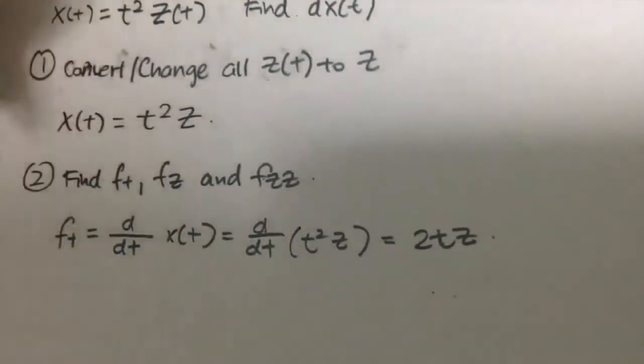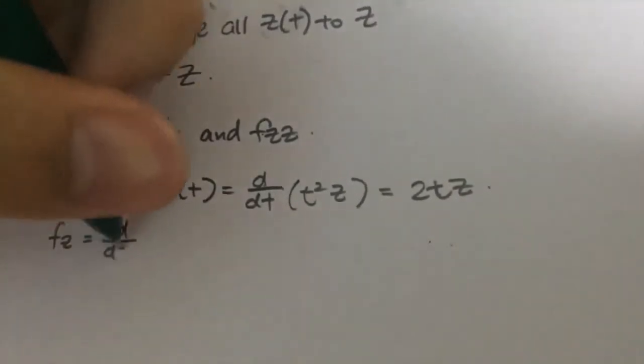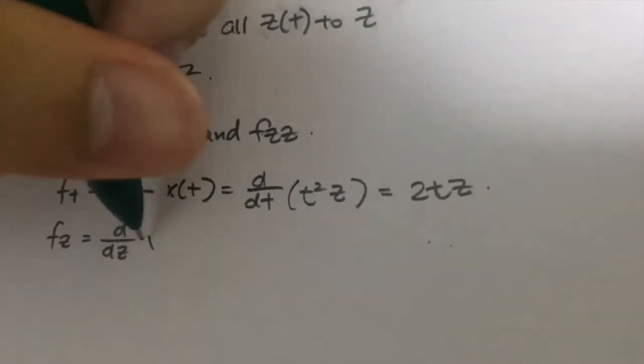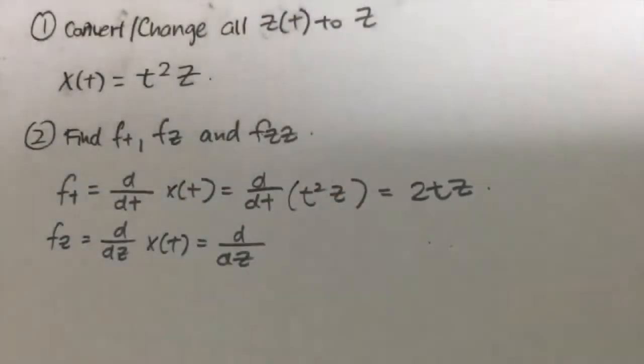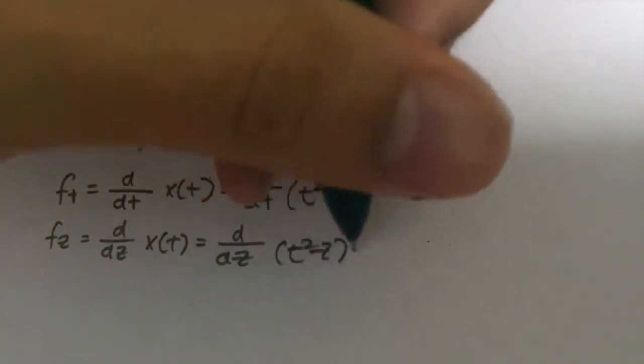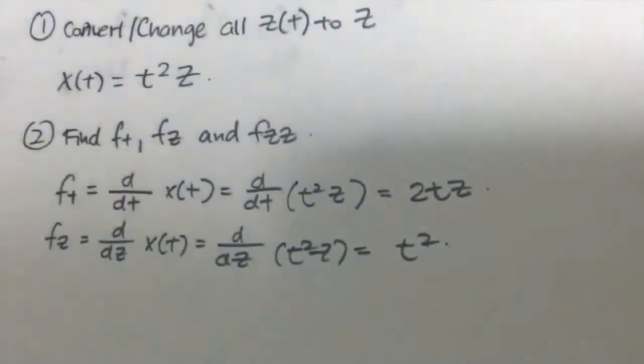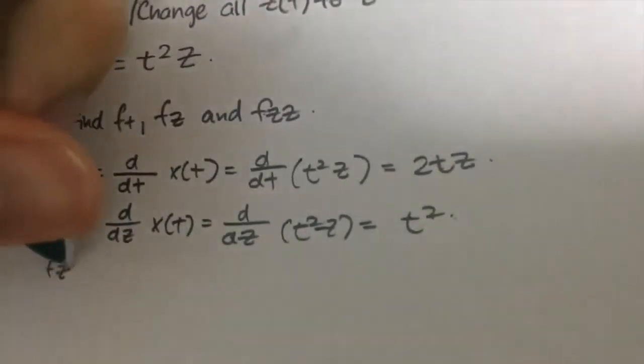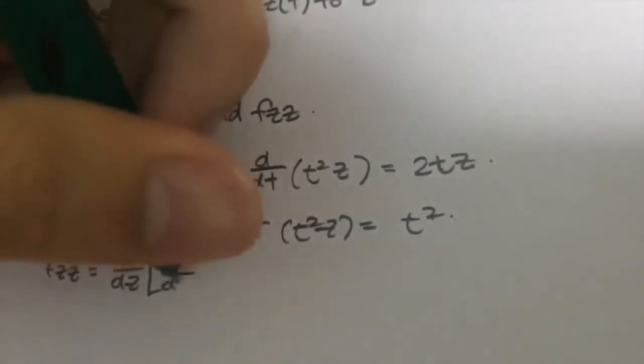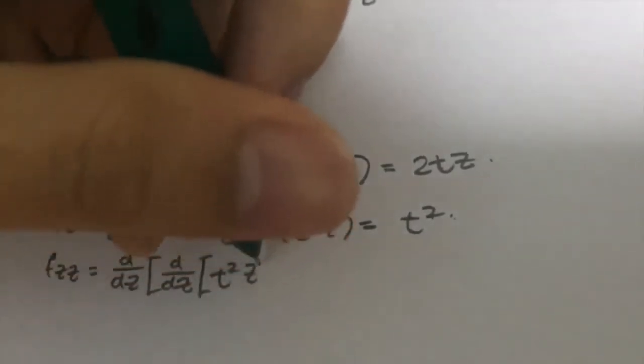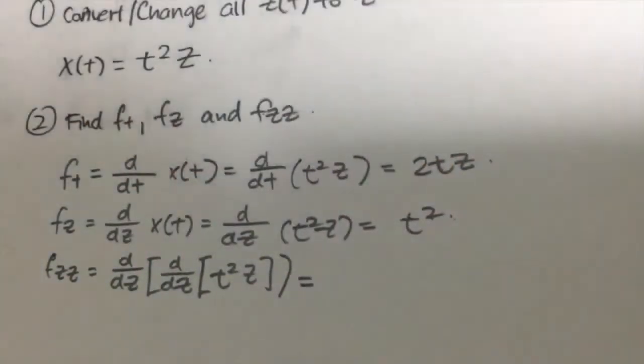Okay, so the next thing that you will do is f_z, that is differentiate with respect to Z of X(t). Same thing, and this is differentiate with respect to Z of t squared Z, that gives you t squared. Okay, and last but not least we have your f_zz, that is just differentiate with respect to Z of t squared, which is your X(t), and this will give you 0.